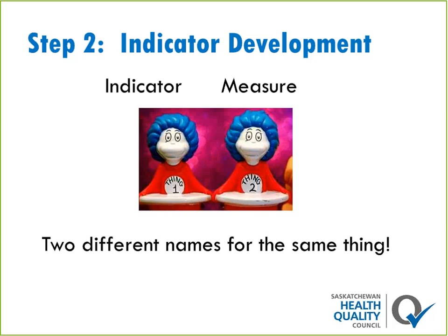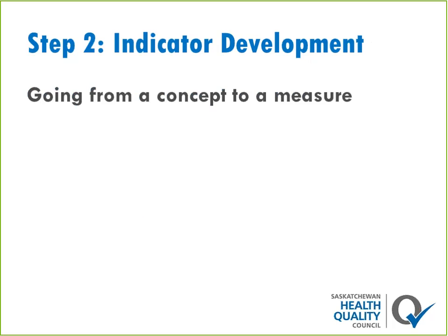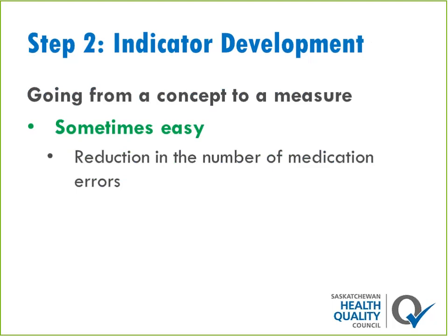The second step is about developing your indicators — what are you going to measure? A quick note: you may hear the term 'indicator' or you may hear 'measure' — they're not different things, they're exactly the same thing and can be used fairly interchangeably. In indicator development, it's really about going from a concept to a measure. Sometimes that's really easy — if your goal is to reduce medication errors, it's pretty clear you want to measure medication errors. But sometimes it can be difficult.